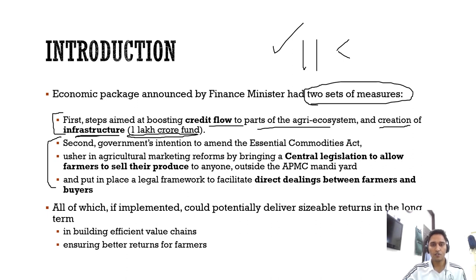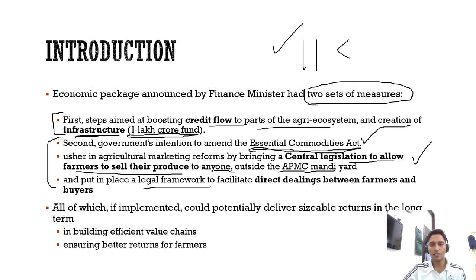Our main focus will be on three key reforms. First is the Essential Commodities Act — the government has announced they will reform this act. Second is ushering in agricultural marketing reforms by bringing a central legislation to allow farmers to sell their produce to anyone beyond the APMC. Third, the government announced they will bring a legal framework to facilitate contract farming — that is, direct dealing between farmers and producers.